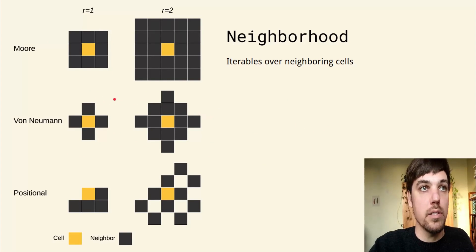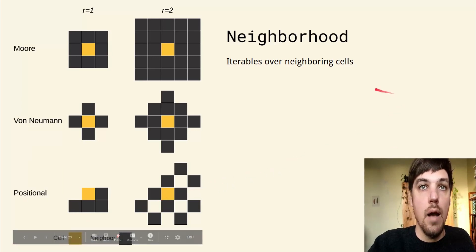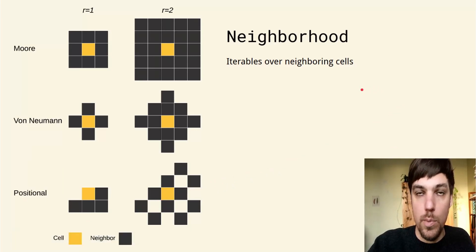This contains a neighborhood object. You can define your own as we do in dispersal.jl for dispersal kernels. But provided in the package are Moore neighborhoods which are a square neighborhood, von Neumann neighborhoods, and positional neighborhoods where you can define any combination of cells around the current cell. You can use these neighborhoods as iterables over the neighboring cells from within the rule.